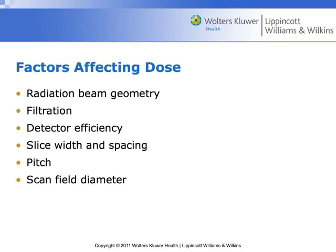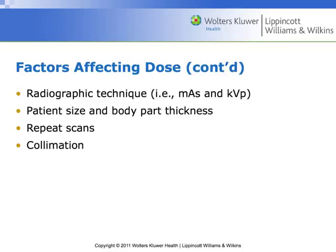There are a number of factors affecting dose. We've already hinted at how beam geometry affects dose. Earlier in the trimester we talked about filtration. Detector efficiency — how effectively the detector can detect radiation — also affects dose. Any time we're adjusting slice width, spacing, pitch, or scan field diameter, all those factors that affect image quality are pretty much directly tied to dose. Image quality and dose are really closely linked.